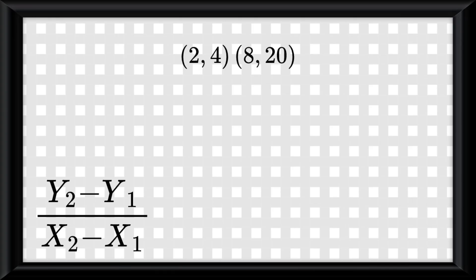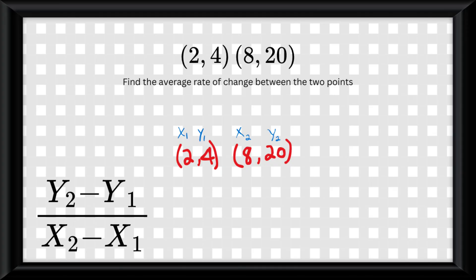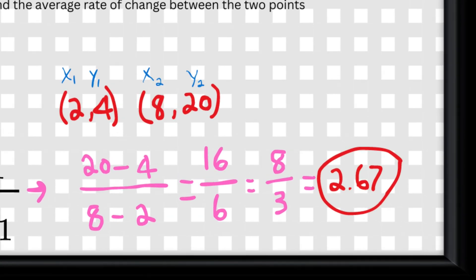If you are given two points on a graph and are asked to find the average rate of change between them, you write the two points down, label them accordingly, so x1, y1, x2, y2, and then you put them in the equation. Solve the equation, and you get your average rate of change for those two points.